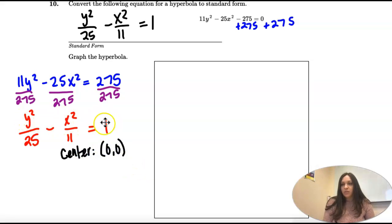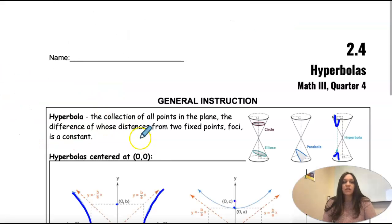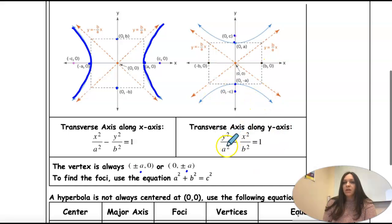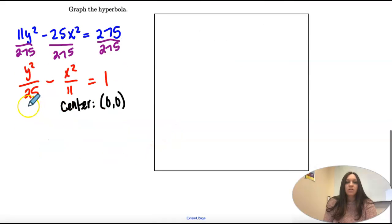And on our equation, we have y squared first. So that means that we're transverse along the y-axis. And our a squared is under the y-axis. So this is a squared and this is b squared.